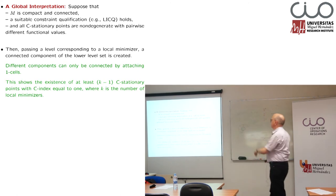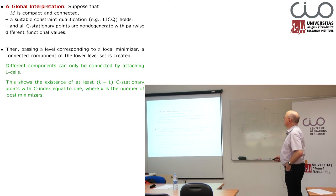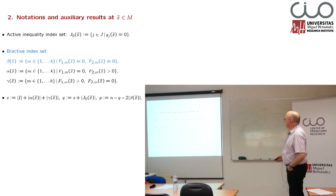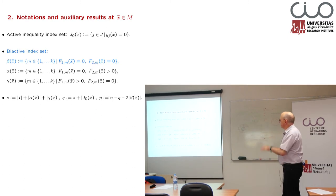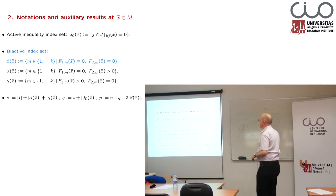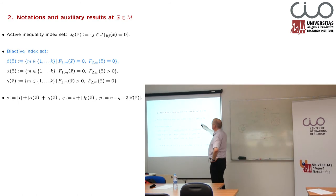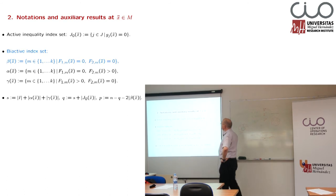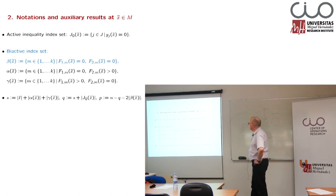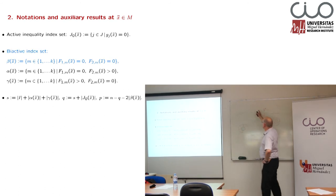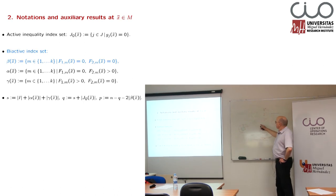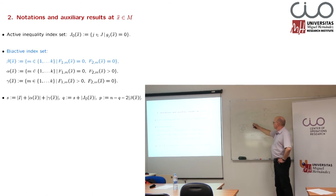These are one possible consequence of this theory. Now we have to state all our results. Some things will be technical, but I will try to avoid too much technicalities here. Active inequality index sets are all those indices where we have corresponding active inequality constraints. The interesting set is the bi-active index set.